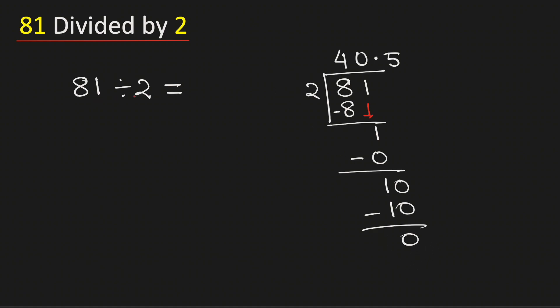Therefore, 81 divided by 2 is equal to 40.5. And this is our final answer.